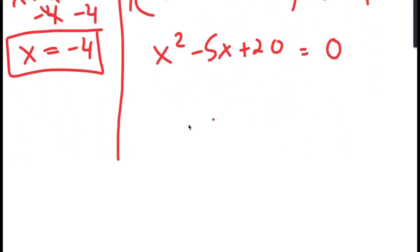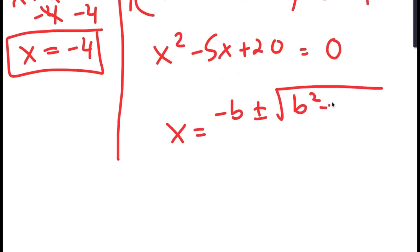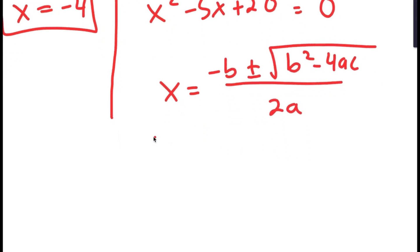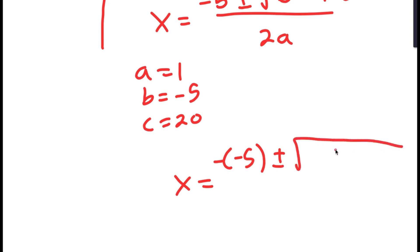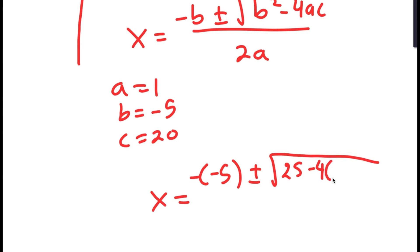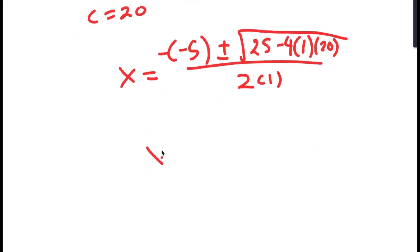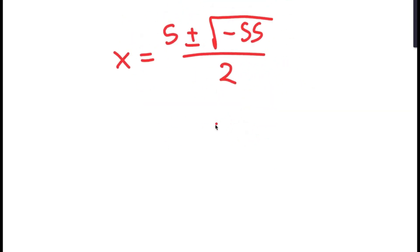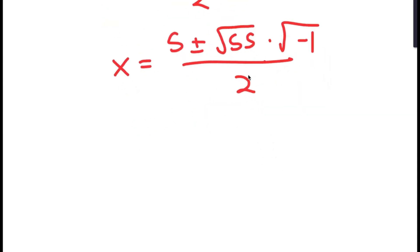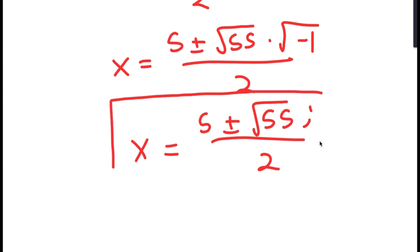To solve x squared minus 5x plus 20 equals 0, I'll use the quadratic formula: negative b plus or minus the square root of b squared minus 4ac, all over 2a. Here a is 1, b is negative 5, and c is 20. So x equals negative of negative 5, plus or minus the square root of negative 5 squared minus 4 times 1 times 20, all over 2. This simplifies to 5 plus or minus the square root of negative 55 over 2, which equals 5 plus or minus the square root of 55 times i over 2. So these are two more solutions to the equation.